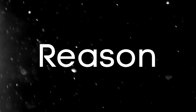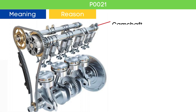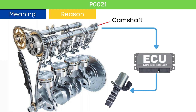Let's learn why P0021 is triggered. The camshaft position sensor measures the position of the camshaft and sends this signal to the ECU. The ECU then sends a pulse command to the Variable Valve Timing (VVT) solenoid to advance or delay the cam position based on engine load and speed. The VVT solenoid adjusts the cam phaser accordingly.